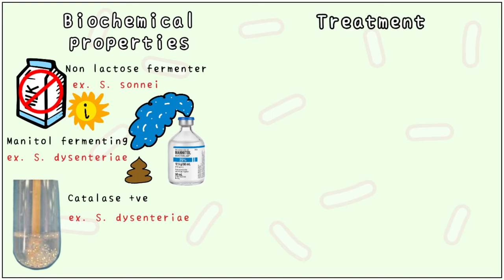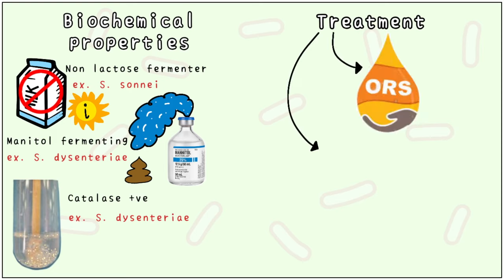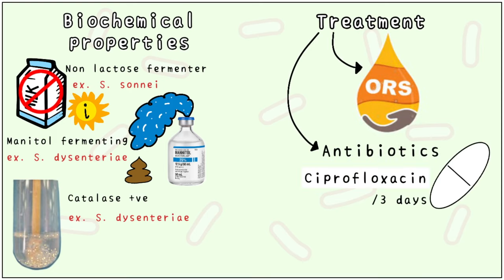The treatment of Shigella is done by using oral rehydrating solutions and antibiotics. The drug of choice is a 3-day course of ciprofloxacin. This may vary as per the strain, severity of infection, and the immune status of the patient.